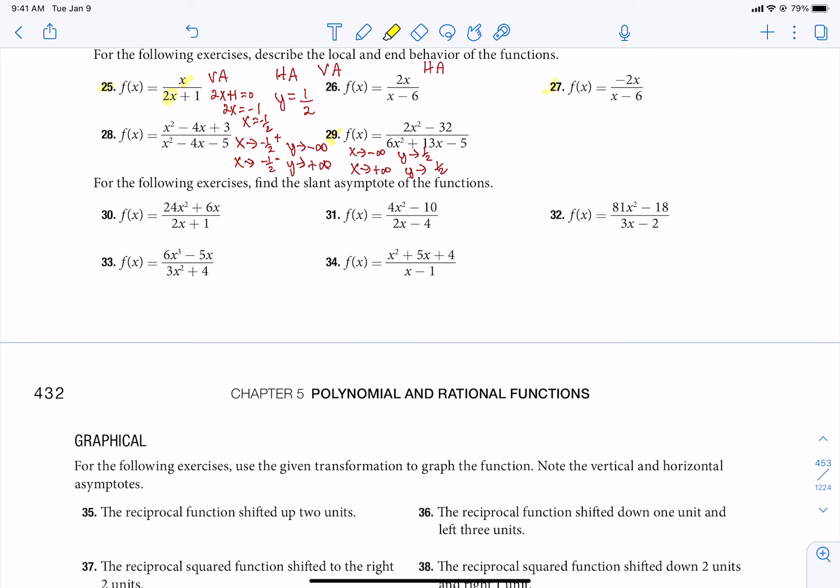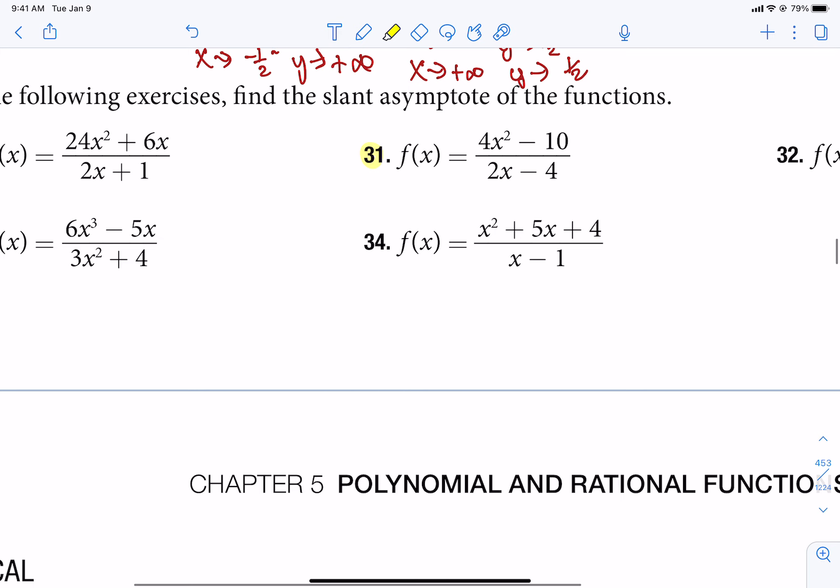And then the last little section here, 31, 33, says to find the slant asymptote. Now, how do we know there's a slant asymptote? Well, if the higher power is 1 on top compared to the bottom, there's a slant asymptote, and this is how you find it.